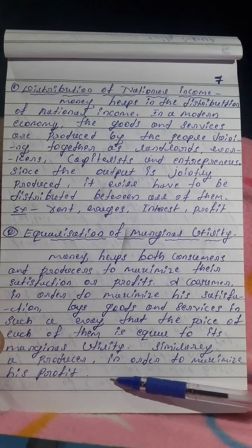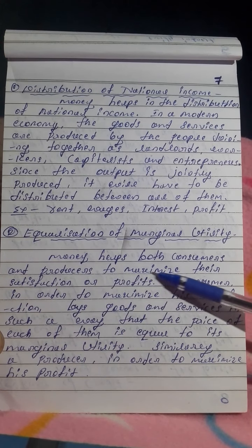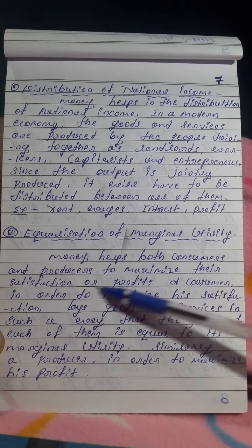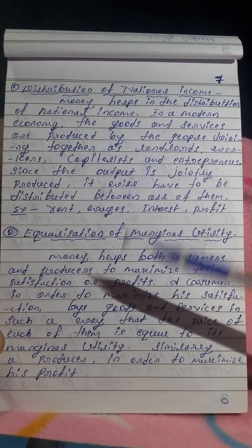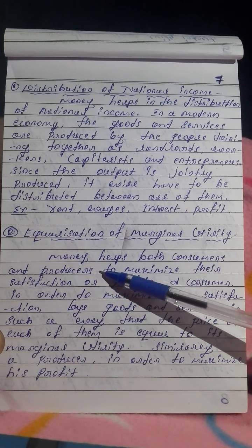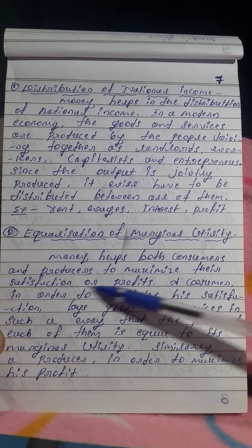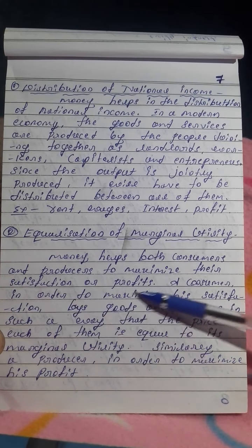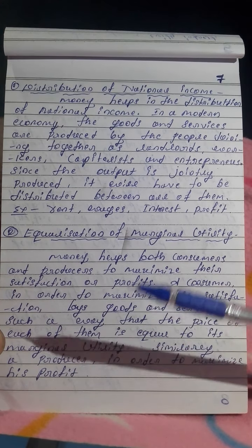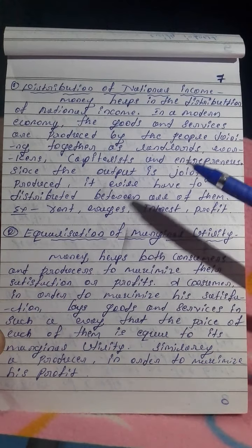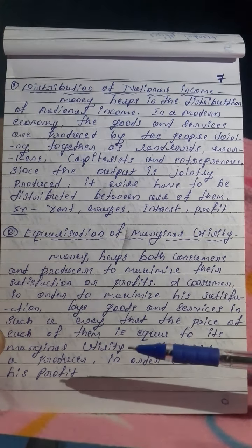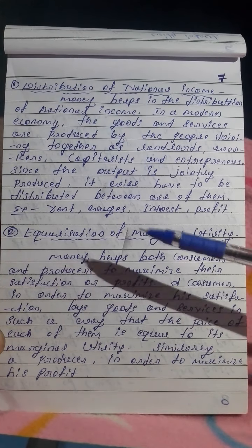Similarly, a producer, in order to maximize profit, allocates resources such that money helps both consumers and producers to maximize their satisfaction or profits. The importance of full goods and different products is considered in the context of typical prices and demand.